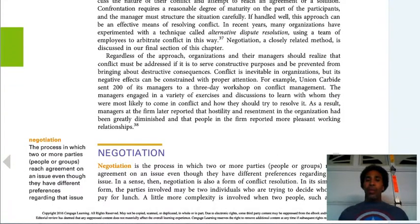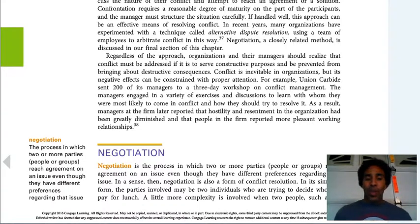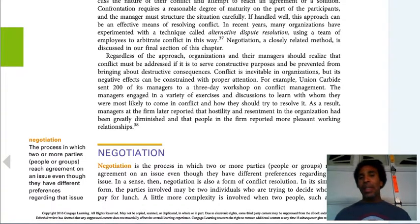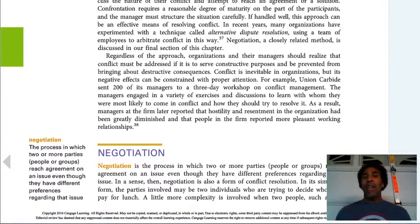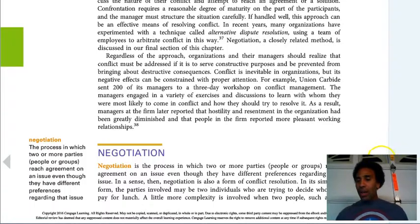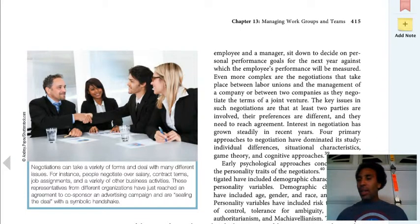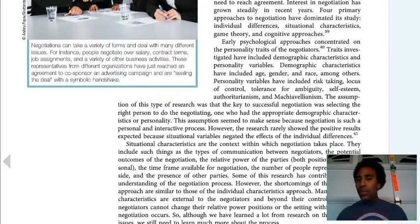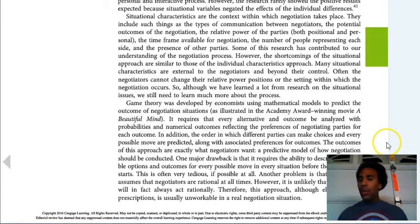Negotiation is a way to resolve conflict — you sit down with the other individual and negotiate. It is the process in which two or more parties reach an agreement on an issue even though they have different preferences regarding that issue. If you negotiate with someone just there to help — a mediator — their suggestions are not binding. But if it's an arbitrator, that's a little different: what they say goes.